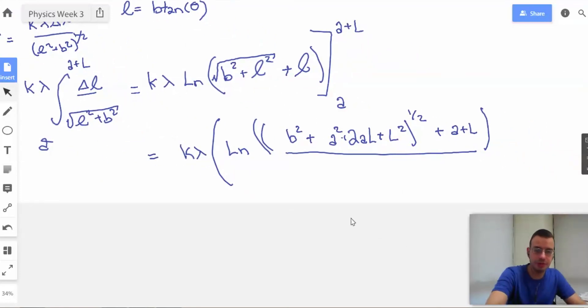Give myself a little more space here. And on bottom we're just gonna have b squared, because b doesn't go away, plus a squared, square rooted, plus a. There we go.